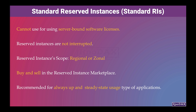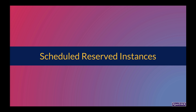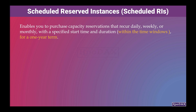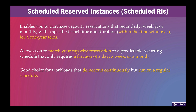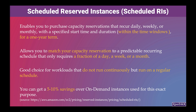Scheduled reserved instances enable you to purchase capacity reservations that recur daily, weekly, or monthly, with a specified start time and duration, for a one-year term. This option allows you to match your capacity reservation to a predictable recurring schedule that only requires a fraction of a day, a week, or a month. They are a good choice for workloads that do not run continuously but run on a regular schedule. You can get a 5–10% savings over on-demand instances used for this exact purpose.